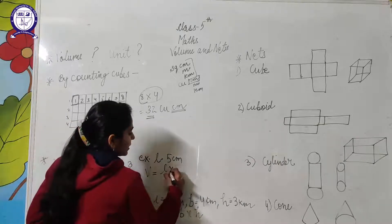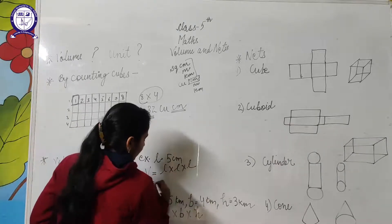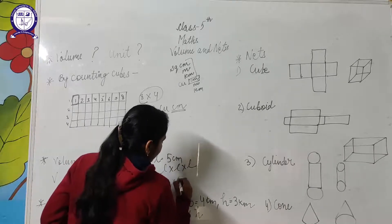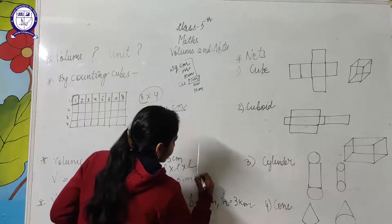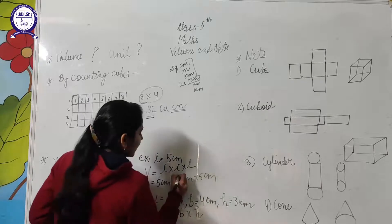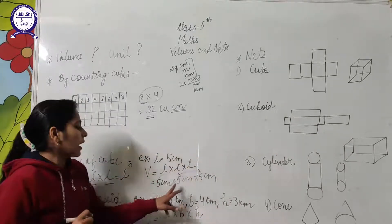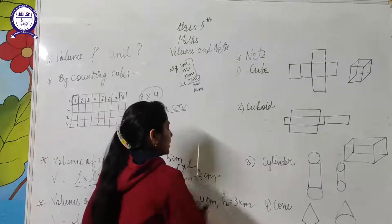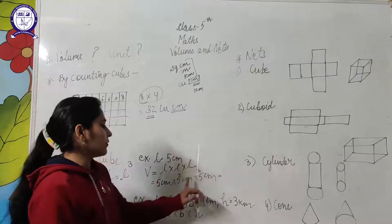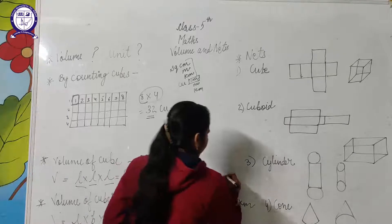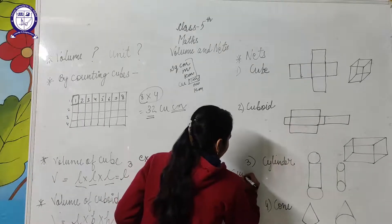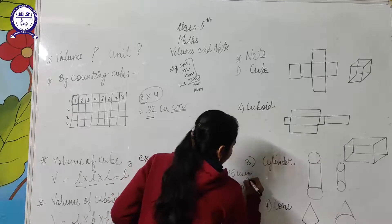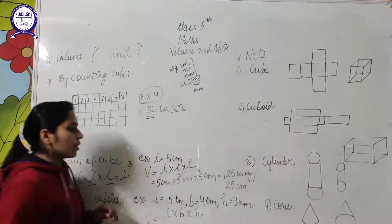Suppose the cube is given whose length of the edge is 5 centimeters. Volume will be 5 cm × 5 cm × 5 cm. While multiplying 5 by 5, we are also multiplying the units, so the units will be in cubic form. 5 × 5 is 25, 25 × 5 is 125. You can write cubic centimeter or centimeter cube. There are two ways to write the volume.